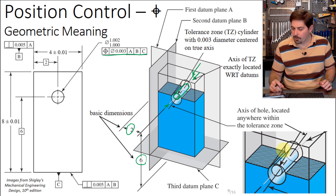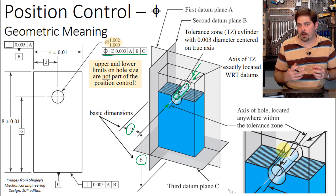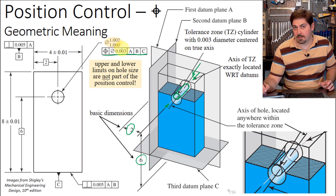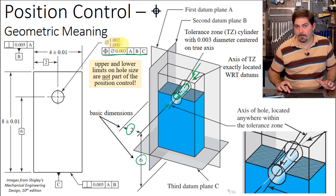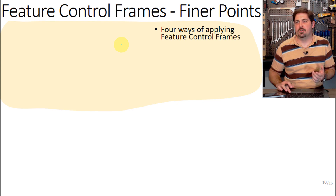The true axis of the tolerance zone cylinder unambiguously locates that zone. The actual axis of the hole — shown in black — is allowed to vary, as long as the entire axis stays within that cylinder. The upper and lower limits on hole size are not part of the position control; those are dimensions of the hole that you could apply whether or not you applied a position control.